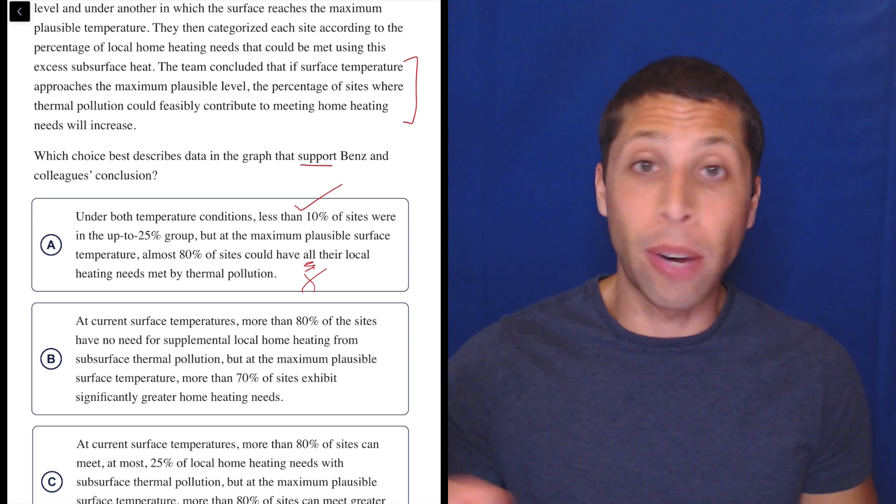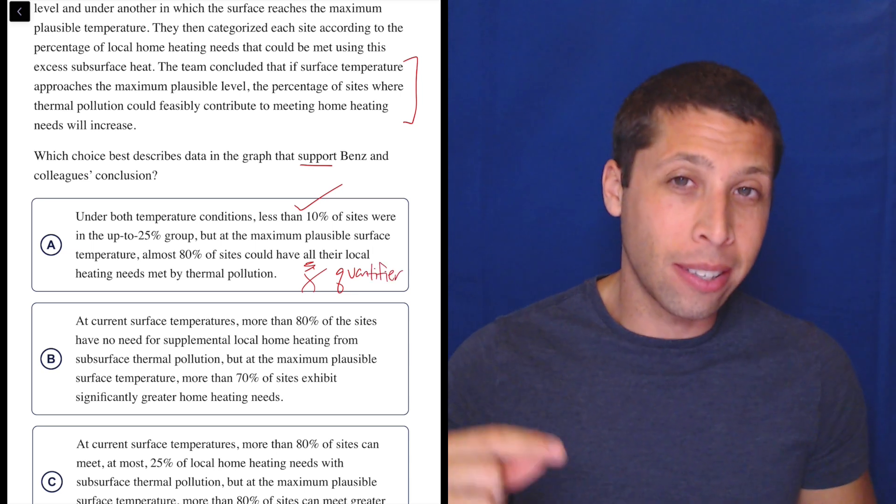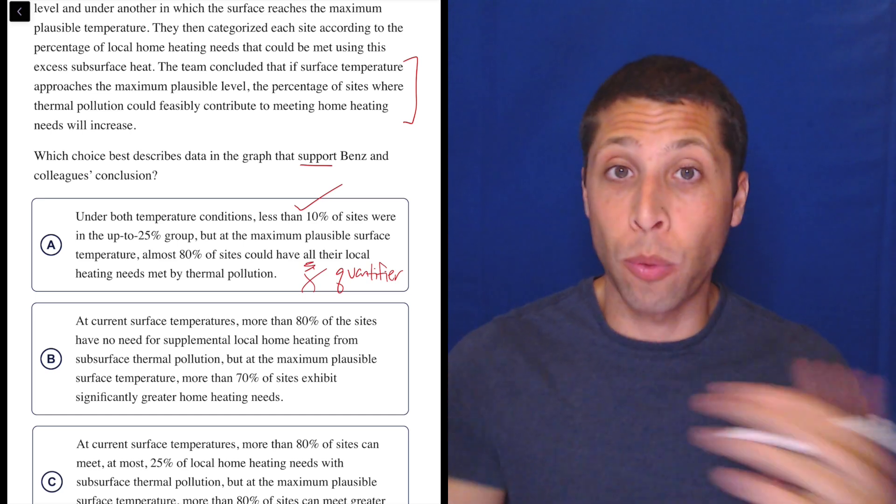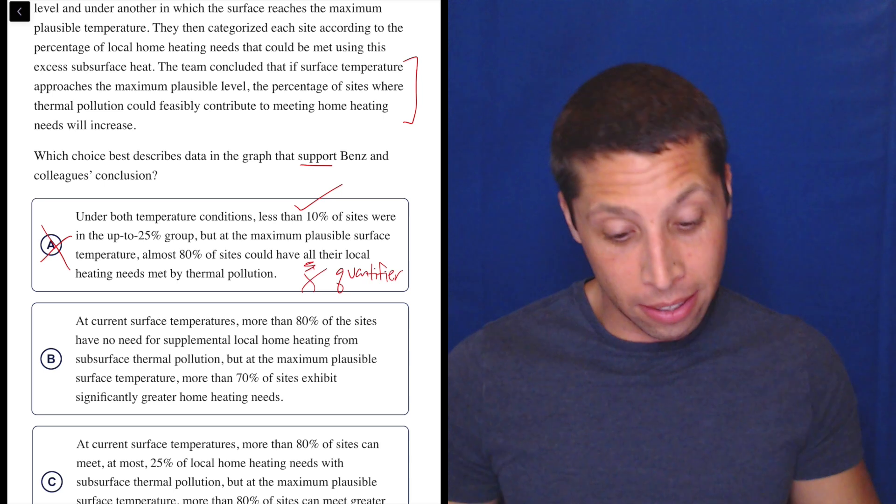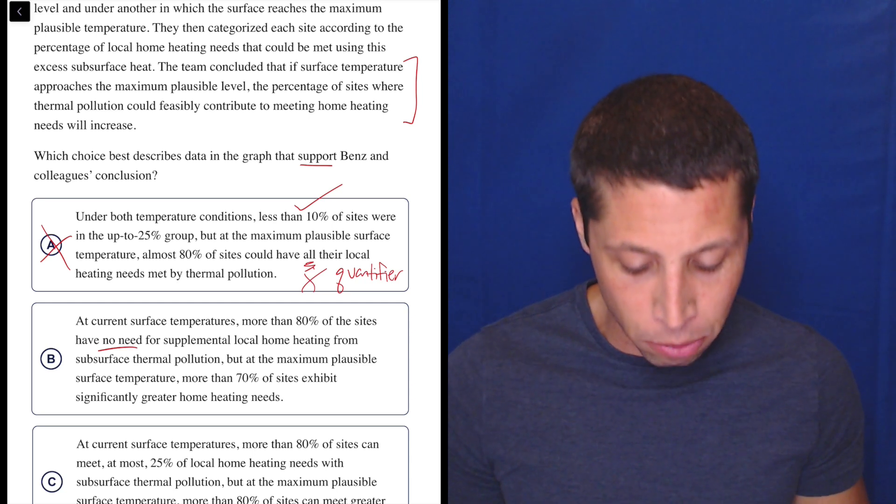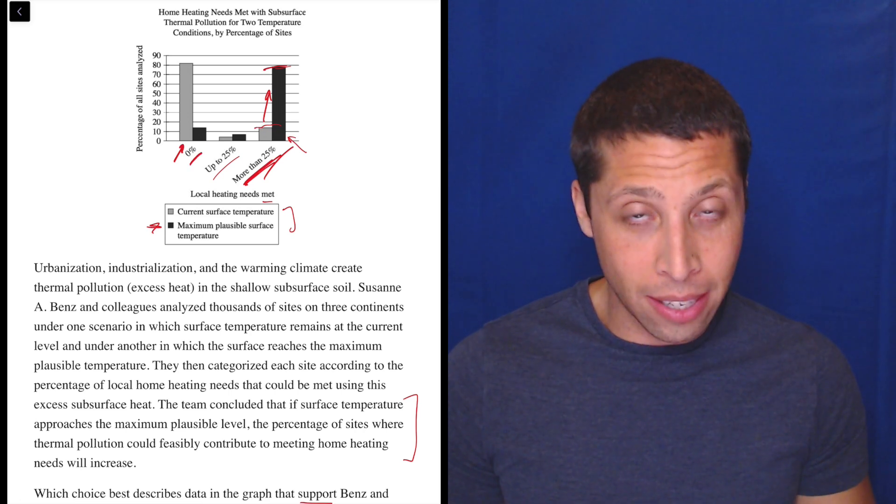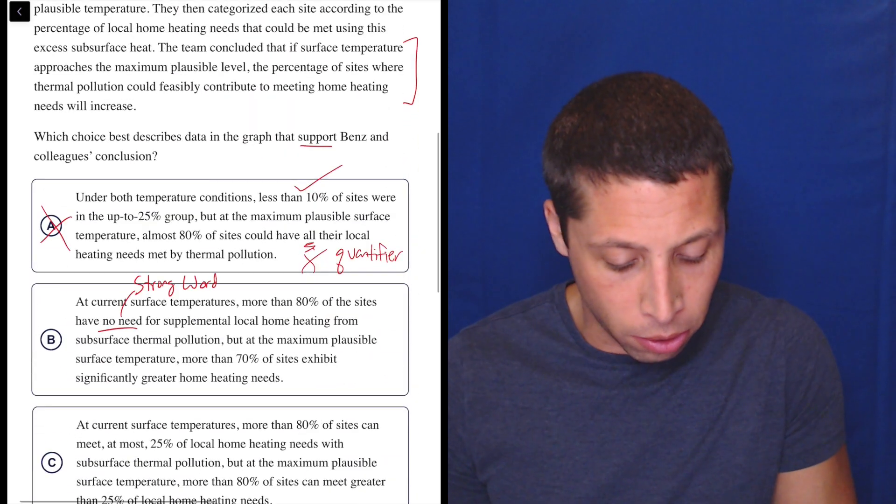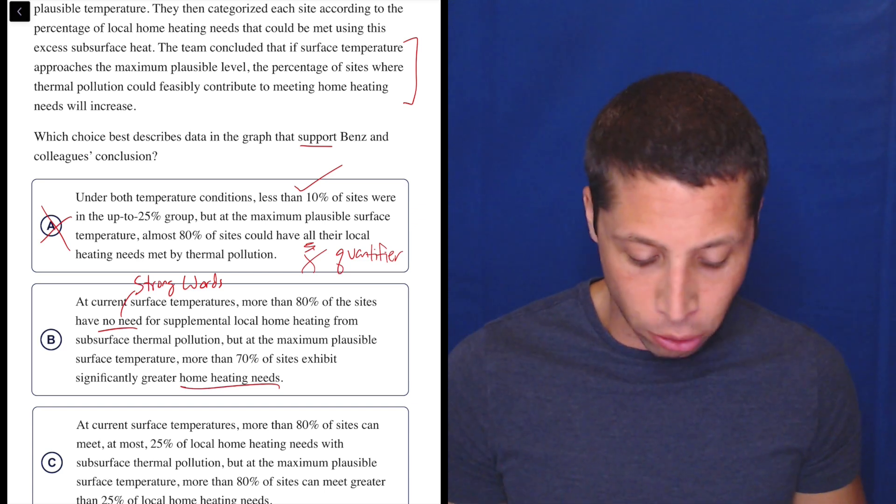That is the kind of thing we see more often on regular old passage questions, main idea things, because these quantifier words can have a big impact here. The quantifier is less about the numbers in the rectangles and more about understanding the scale. Like what do the X and Y axes even mean? So that's tough. That's not common. I think that's why a lot of people get this one wrong is they're not looking at that aspect of the chart. But let's continue. B: at current surface temperatures, more than 80% of the sites have no need for supplemental local home heating from subsurface thermal pollution. I don't know what they need, right? I mean, it says that they can't do it. So more than 80% can't get any, but what they need, I don't know.